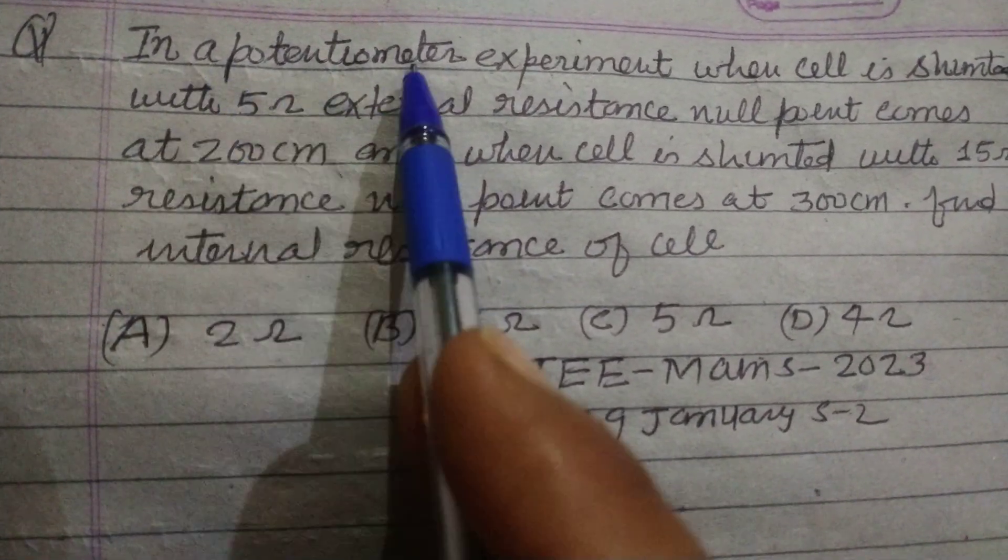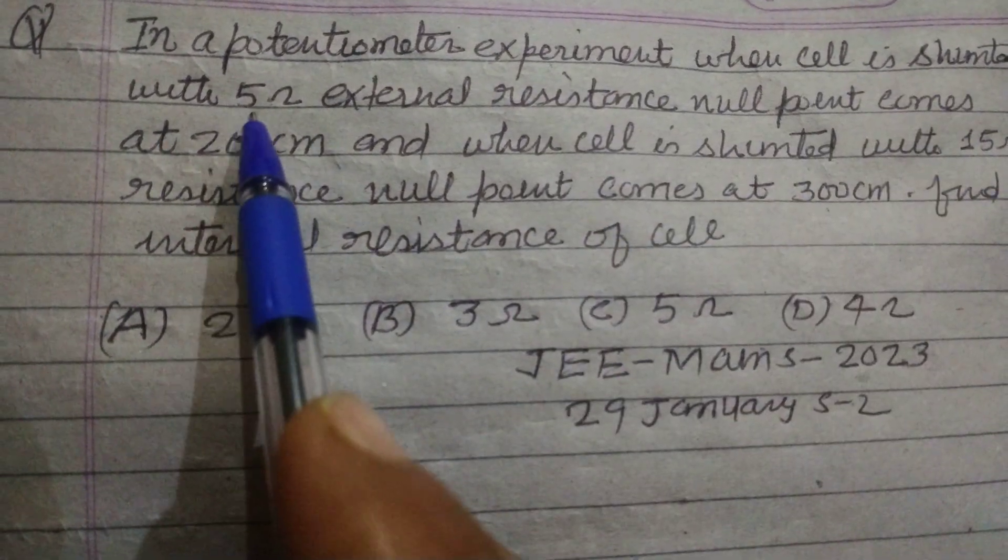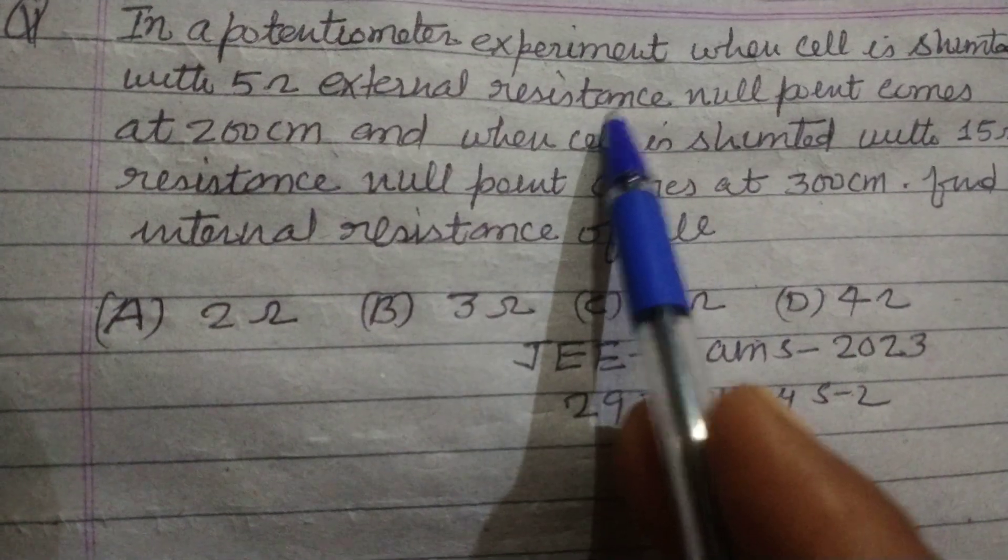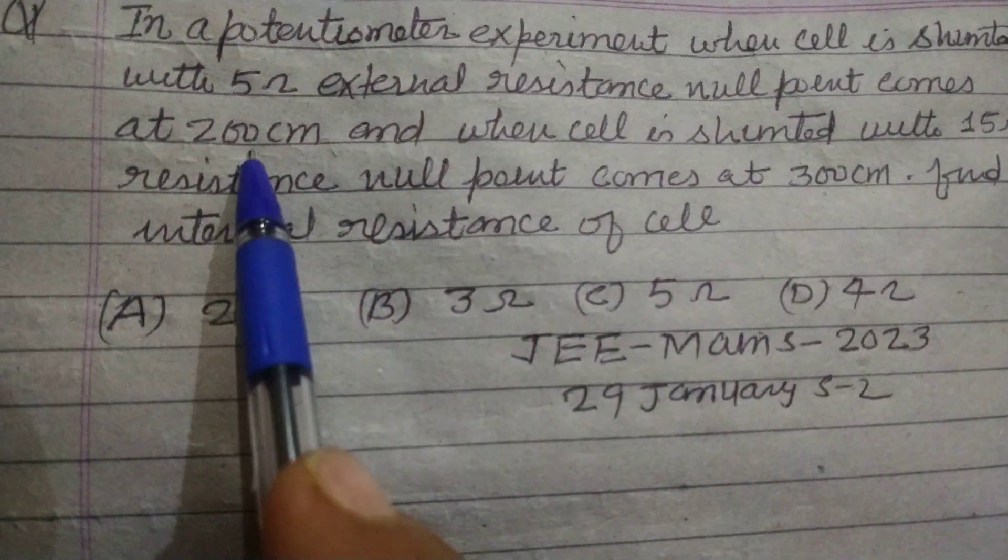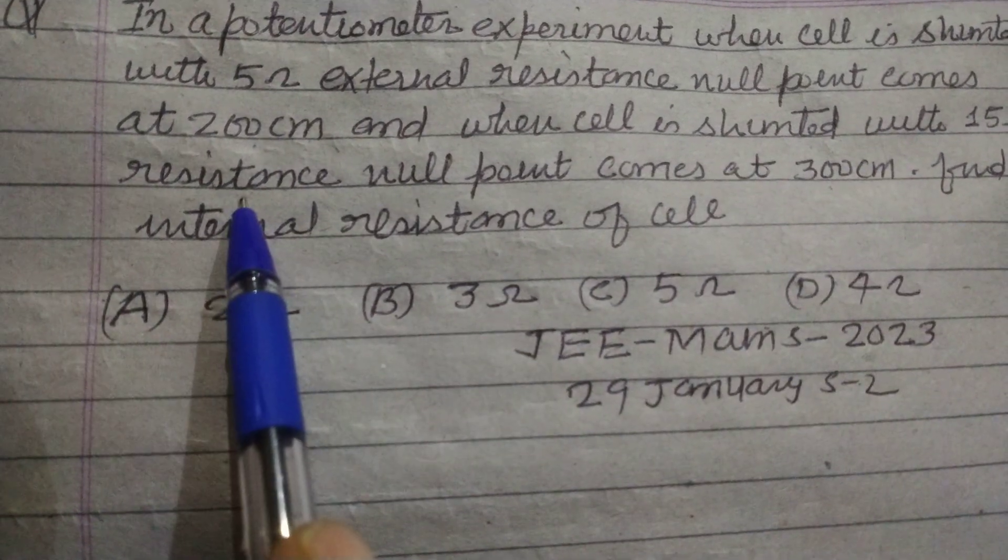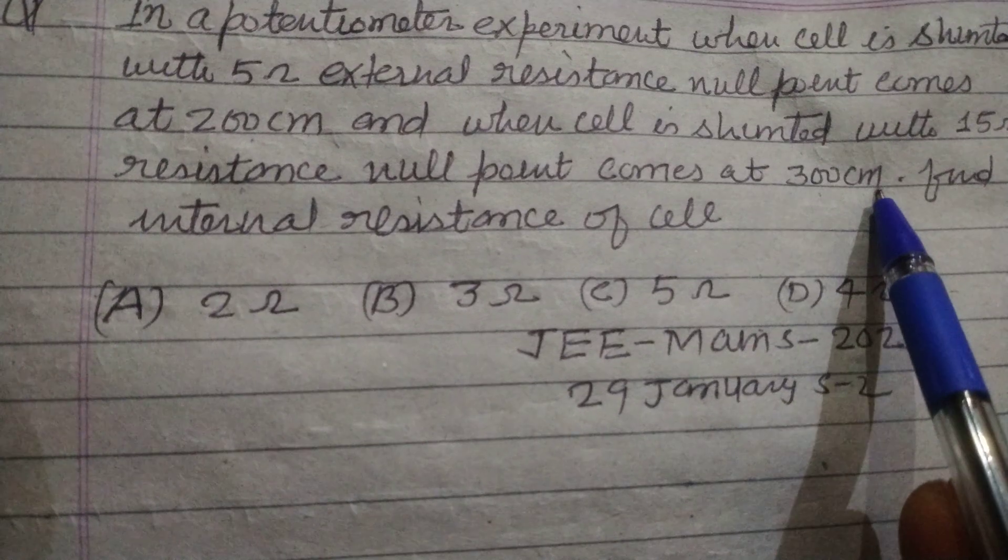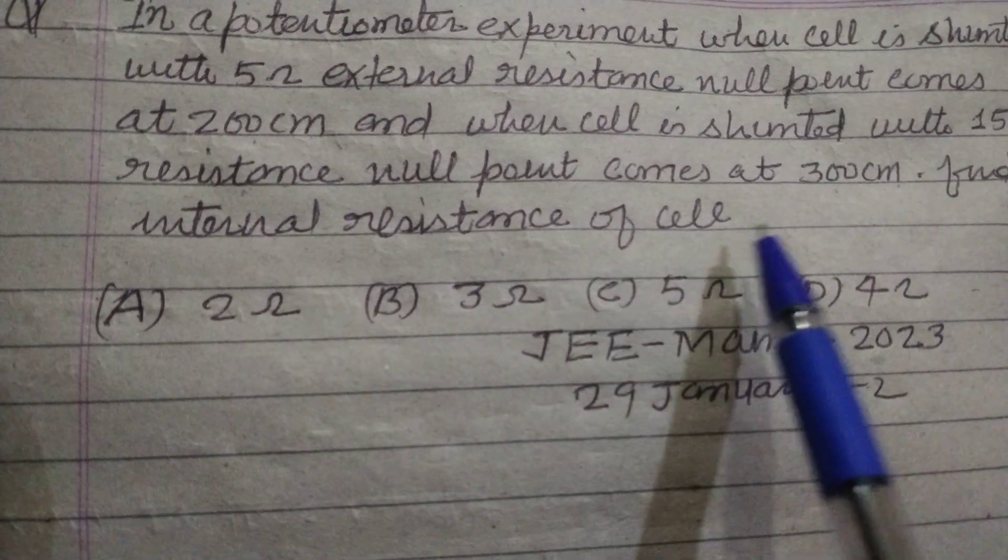In a potentiometer experiment, when cell is shunted with 5Ω external resistance, null point comes at 200cm, and when cell is shunted with 15Ω resistance, null point comes at 300cm. Find internal resistance of the cell.